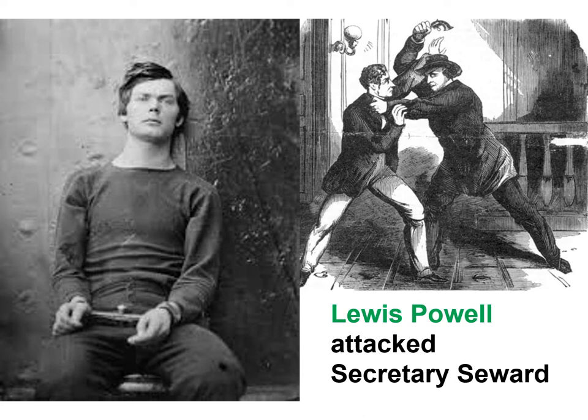Booth had co-conspirators. The plan was that while he killed Lincoln, another conspirator named Lewis Powell would attack Secretary of State Seward at his home. Powell went through with the attack — he entered the home and they wrestled with Seward, severely injuring him — but Powell didn't kill Seward. Seward survived.